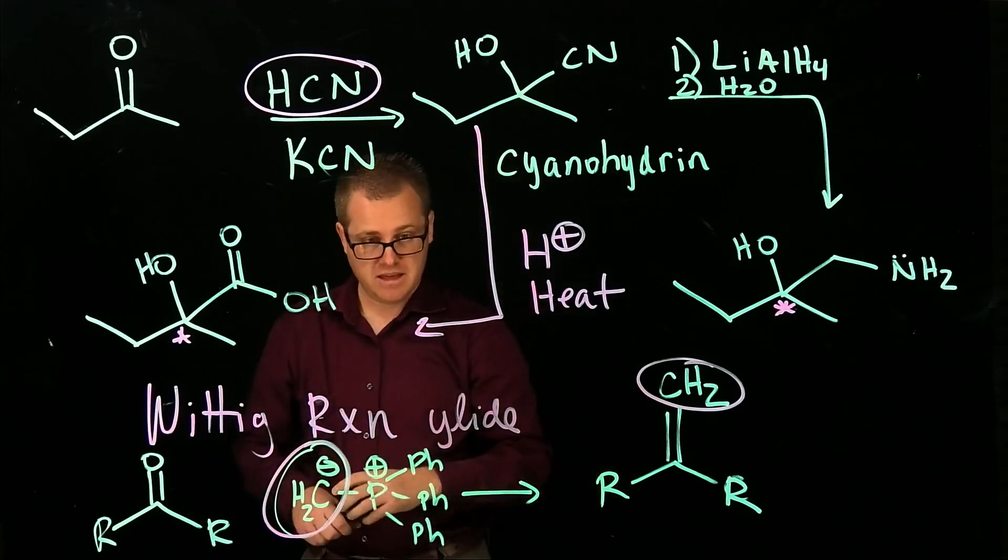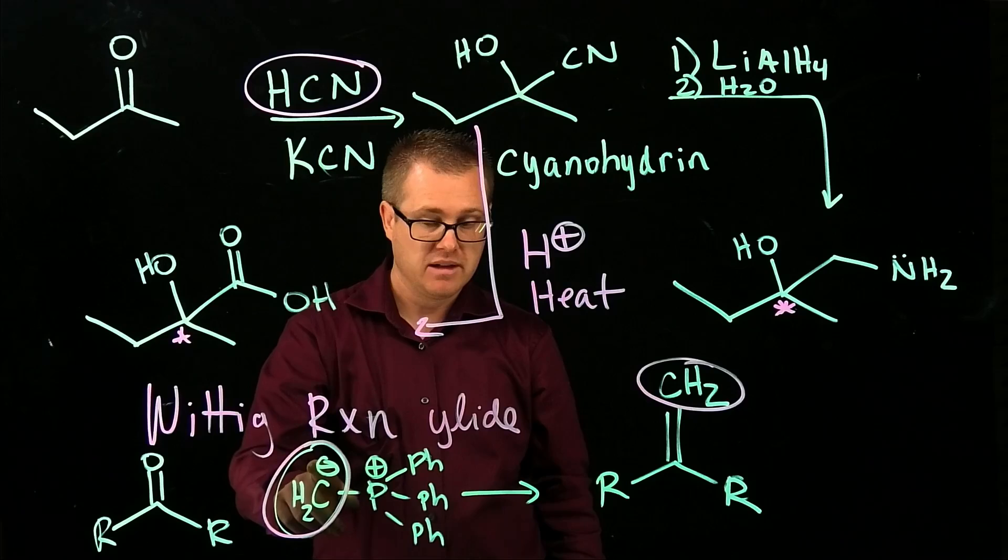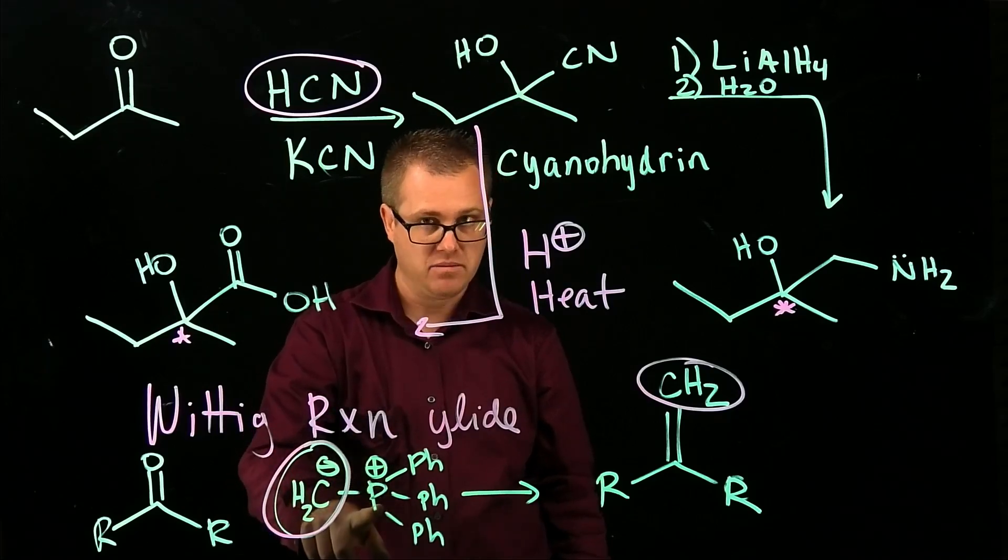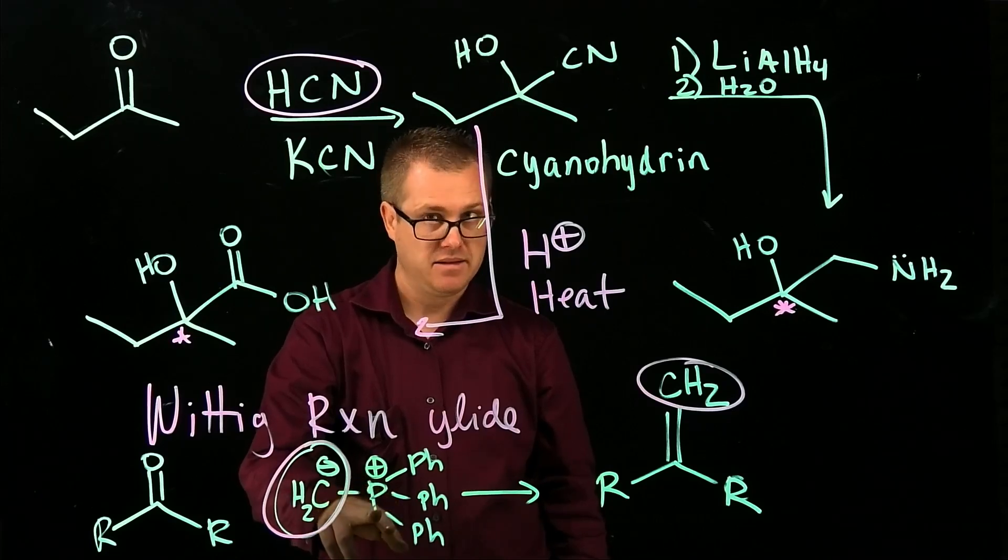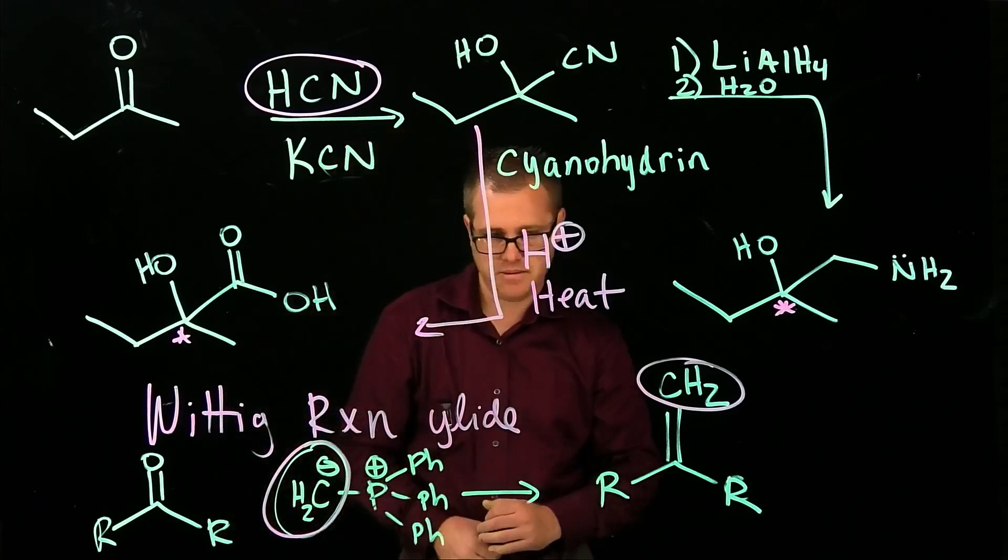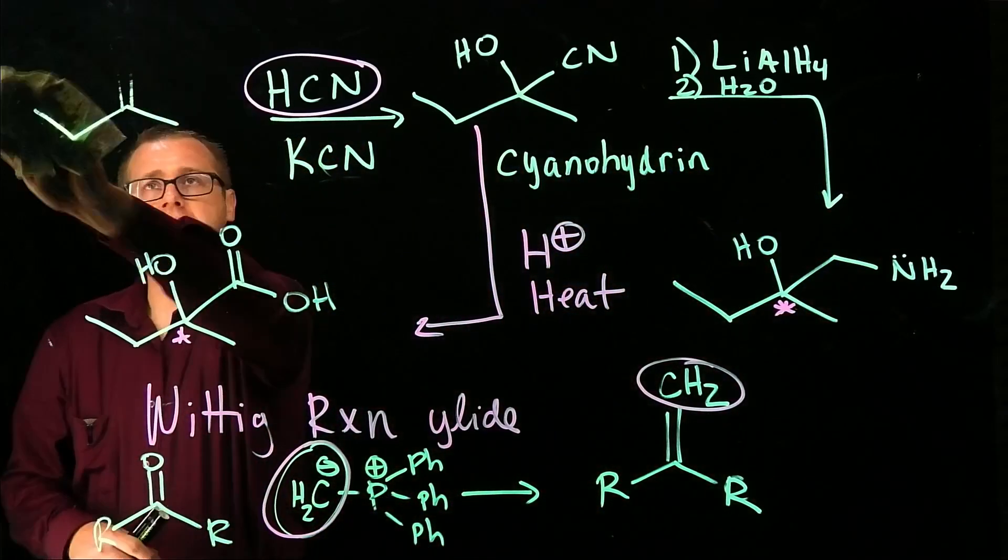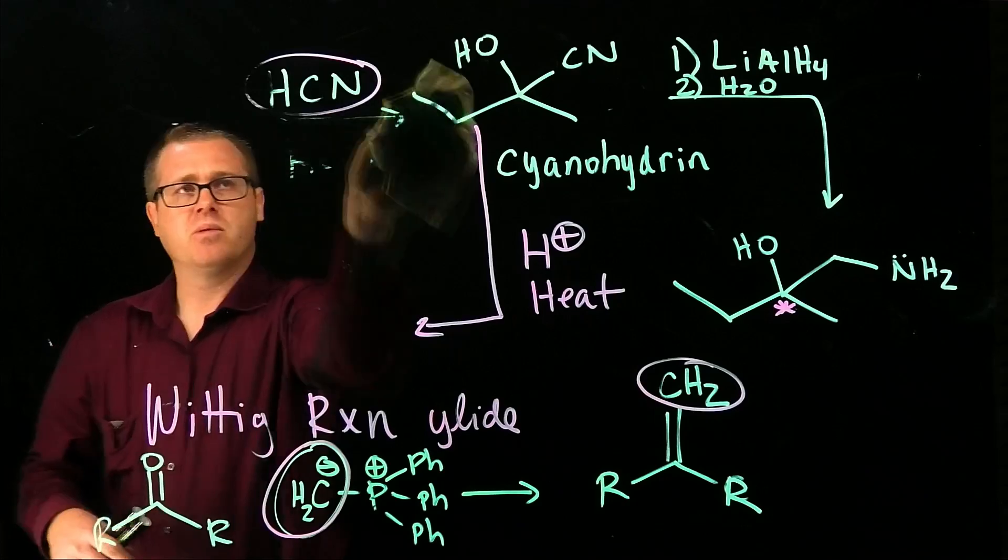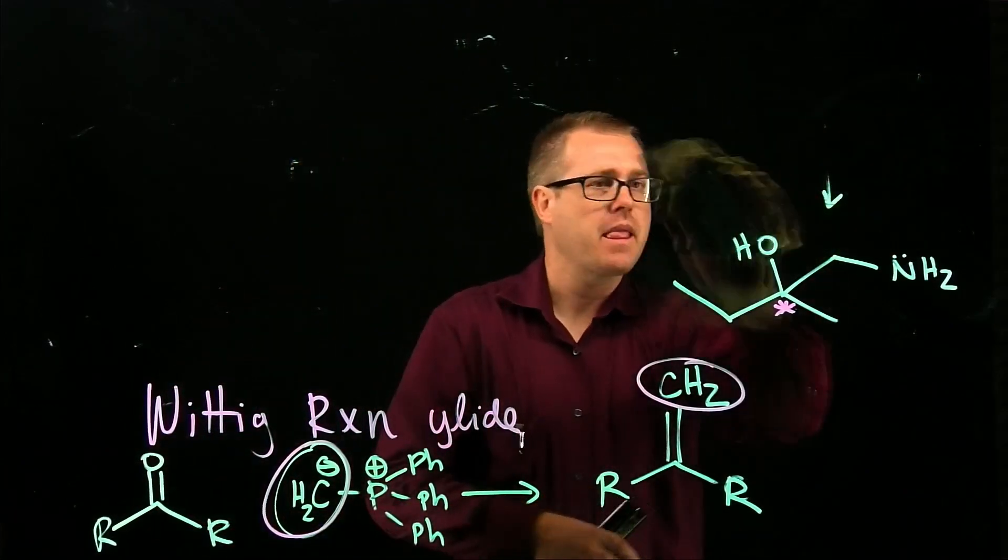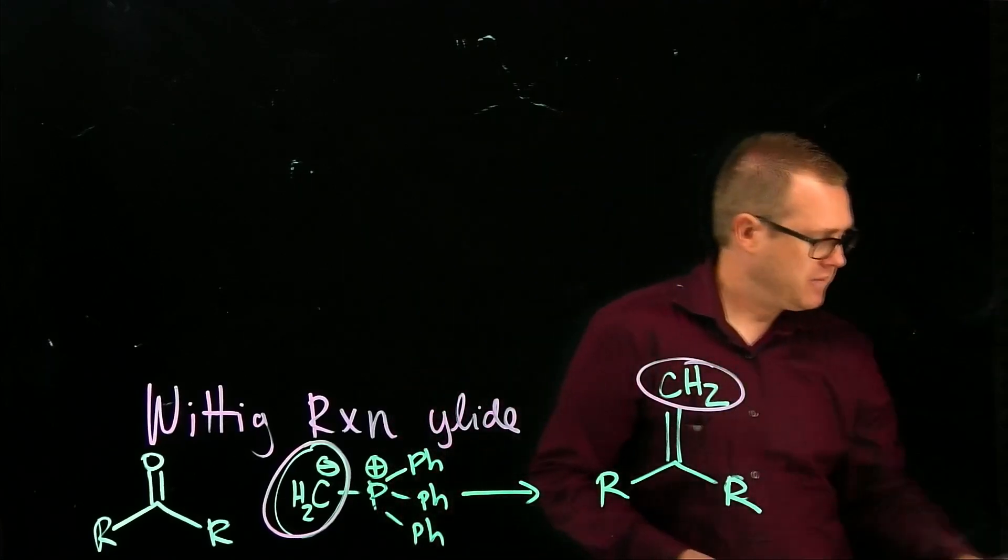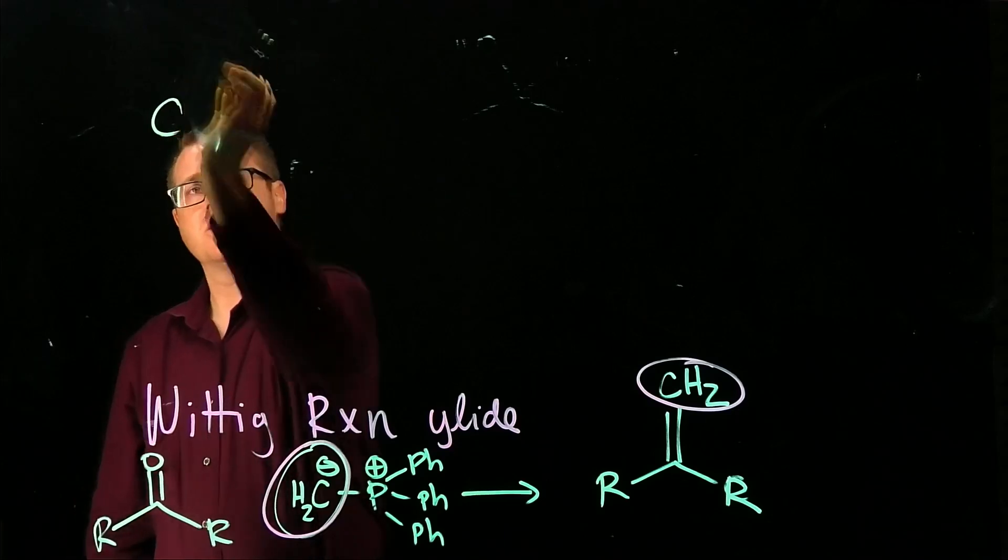And a ylide, by definition, is a carbon atom that is negatively charged that is directly attached to a hetero atom that is positively charged. That is, by definition, a ylide. Now I want to take a look at the ylide and look at that in a little bit more detail right now, before we stop this. So if we have negatively charged there, that's our ylide.